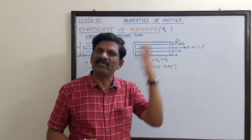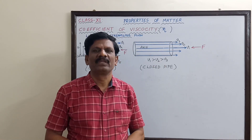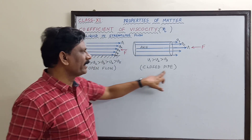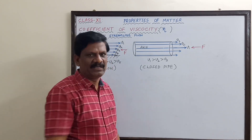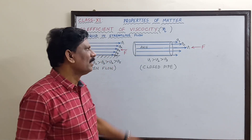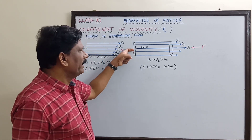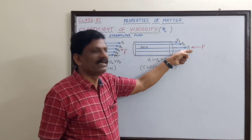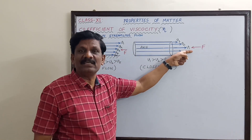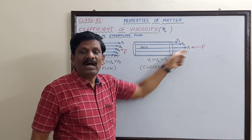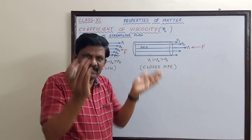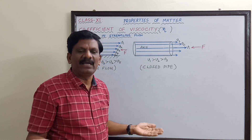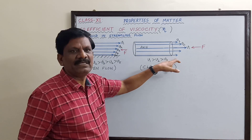Similarly, if you take a closed pipe inside which water is flowing, the layer of liquid flowing along the axis will have the greatest velocity, and the other layers in contact with it will gradually have a decrease in velocity.